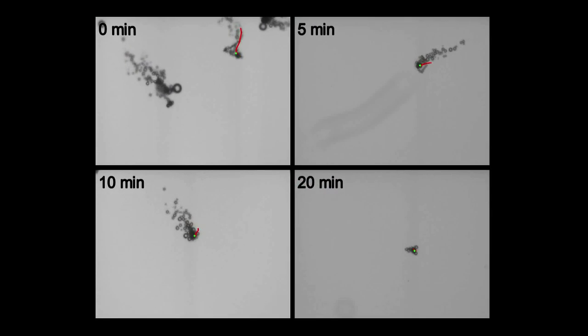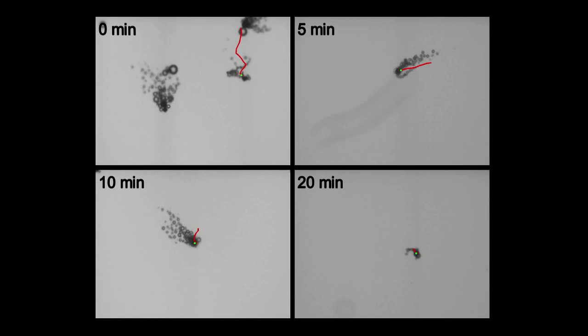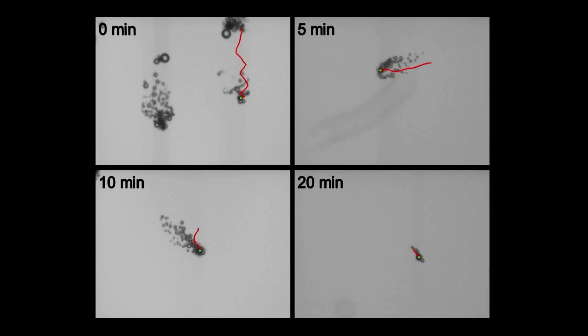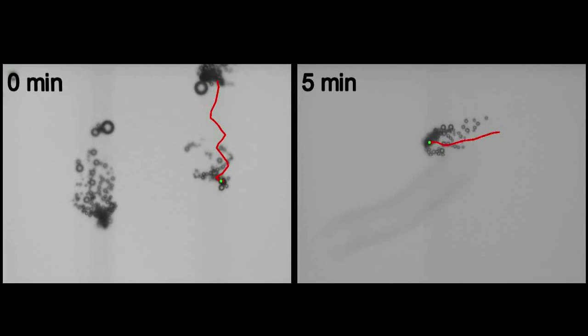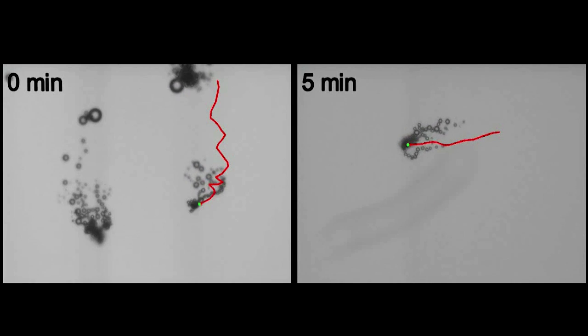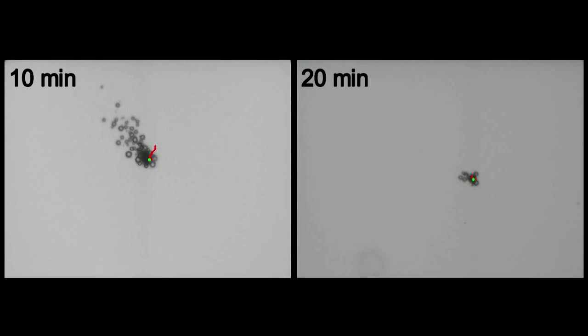Lab testing showed that the particles can motor around in water for 15 to 20 minutes before the fuel, or magnesium, is spent. In that time, they can collect and kill more than 80% of E. coli in water spiked with a high concentration of the bacteria. The researchers say that adding more bots could potentially improve these numbers even further.